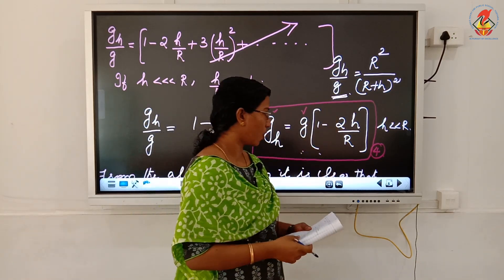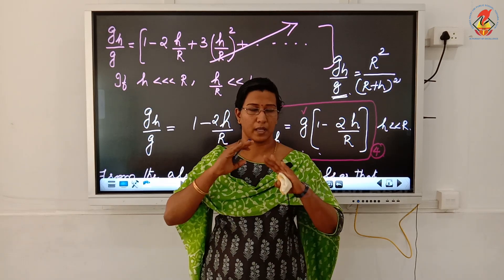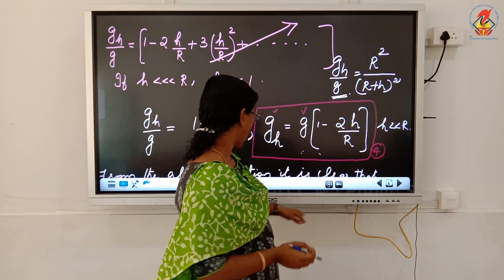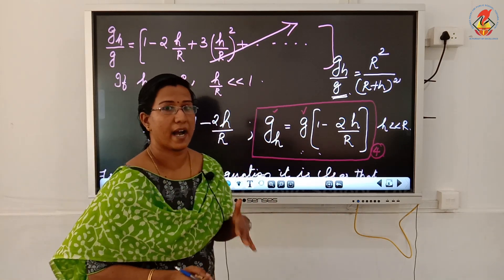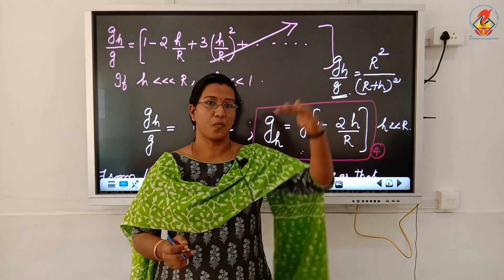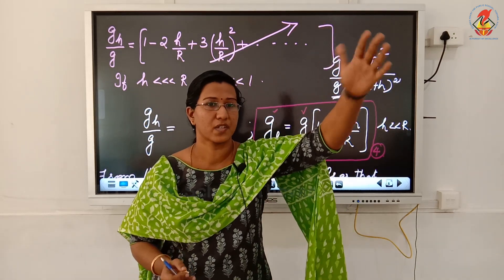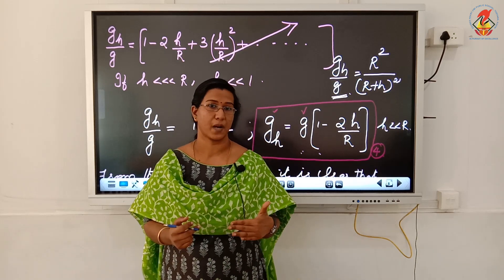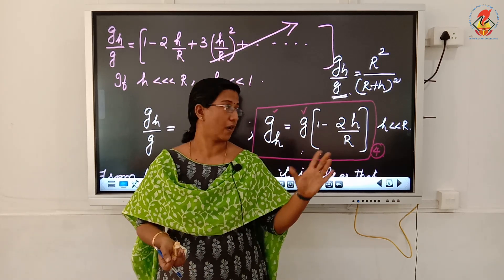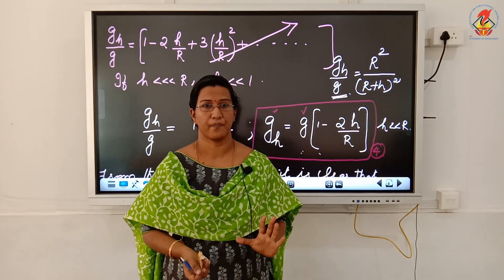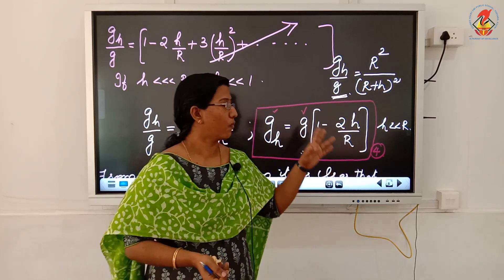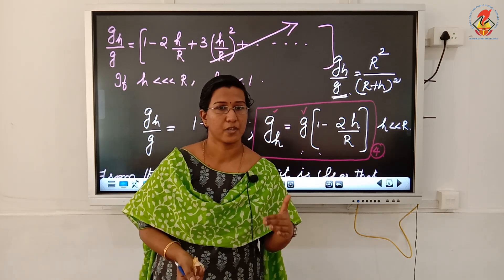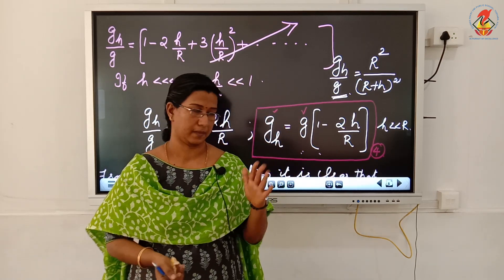To summarize: we considered an object on the surface of the earth where acceleration due to gravity is g = GM/r². Then we kept the object at a height h and got gₕ = GM/(r + h)². We derived two main equations — equation 3 for the general case, and equation 4 which is used only when h is very small compared to the radius of the earth.